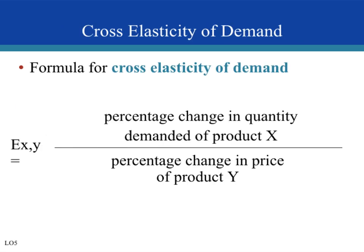Let's talk about cross-elasticity of demand. This measures how a change in the price of one product causes you to change your demand for another product. For example, I talked about Coke and Dr. Pepper earlier. The formula is percentage change in quantity demanded of product X divided by percentage change in price of product Y. For any percentage change calculation in elasticity, we still use the midpoint formula.